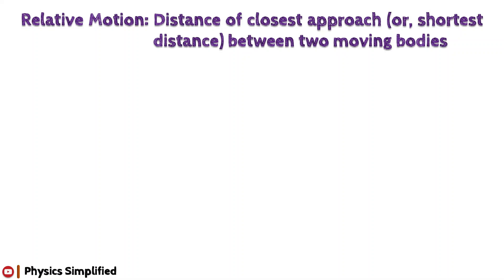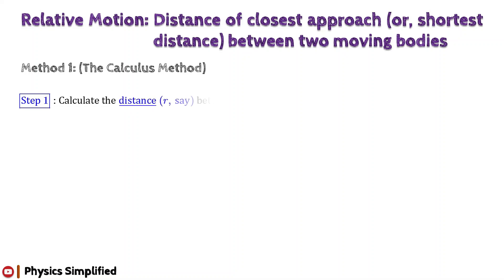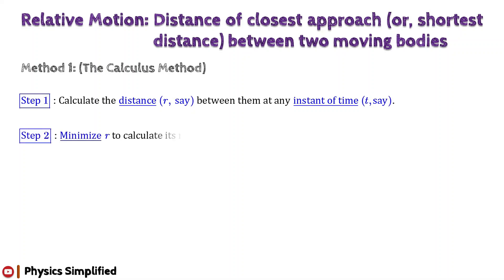In our first method, we will apply the technique of calculus. Let us divide this method into three simple steps to understand the logic behind this. In step one, we will calculate the distance, denoted by r, between the two moving bodies at any instant of time t, by using the given information. In step two, we will minimize r to calculate its minimum value, using the concept of maxima and minima.